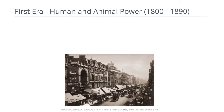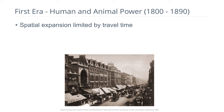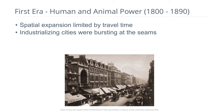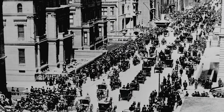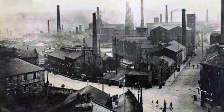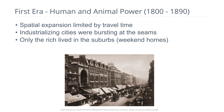The first era is the human and animal-powered city. Spatial expansion was limited by travel. These cities were growing rapidly as people moved from rural to urban areas during the Industrial Revolution. These cities were packed, very dense, with lots of environmental problems — factories next to houses and lots of crowding — because the city literally couldn't expand since transportation couldn't get you far from the center of employment.